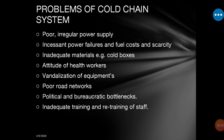Now the problems of the cold chain system — what are the problems that usually arise? Number one is poor and irregular power supply. Here in Nigeria, we all know we are suffering from shortage of electricity, and due to that, a lot of vaccines are being damaged.